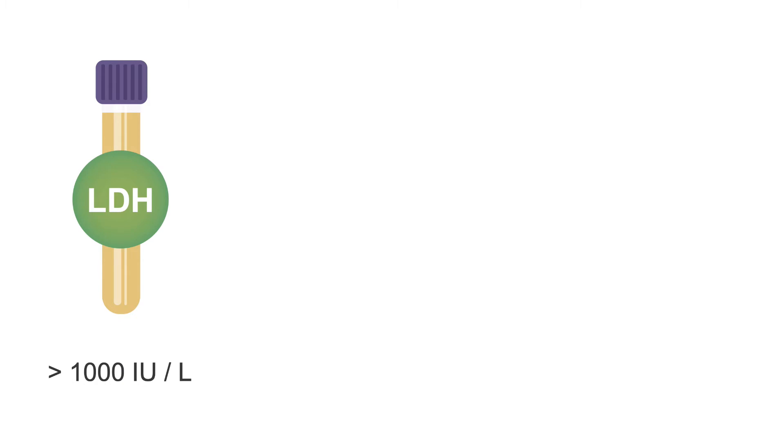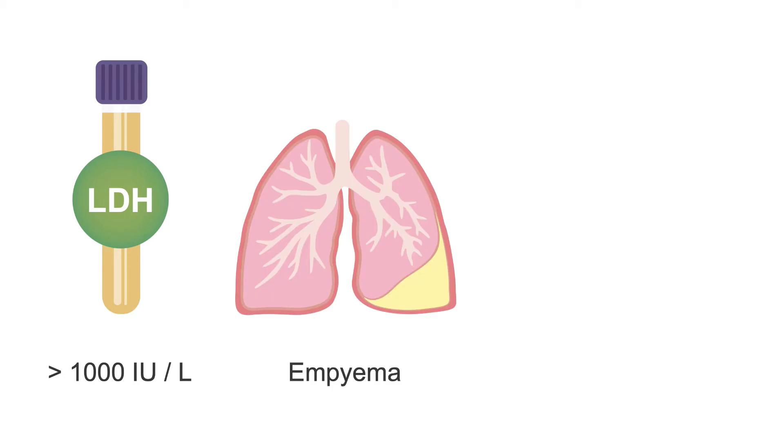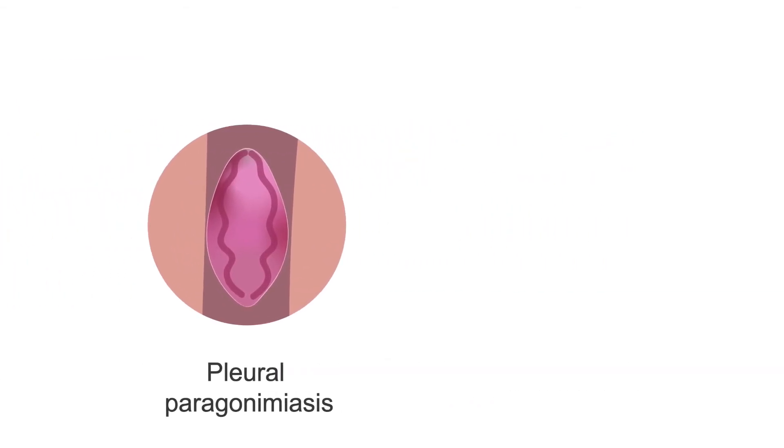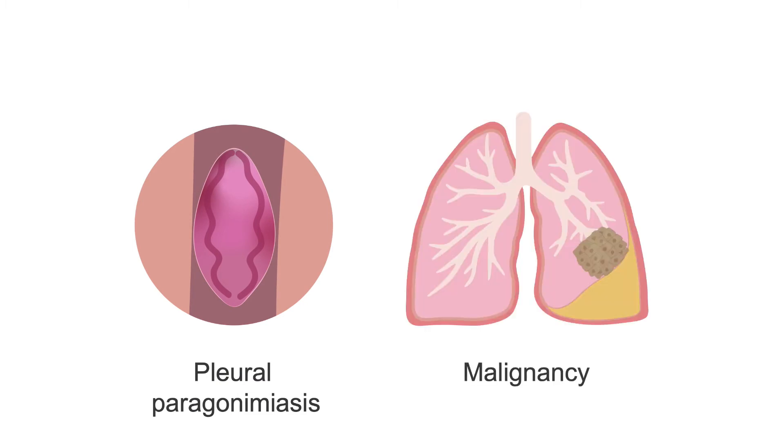Pleural fluid lactate dehydrogenase levels above 1000 international units per liter are characteristically found in empyema, rheumatoid pleurisy, and pleural paragonimiasis, and are sometimes observed with malignancy.